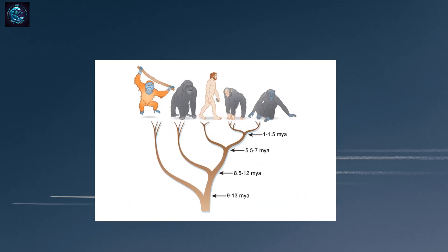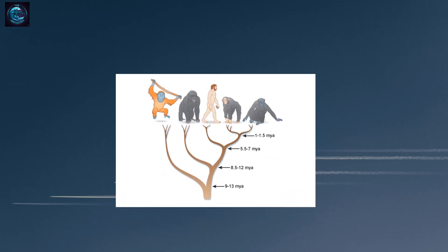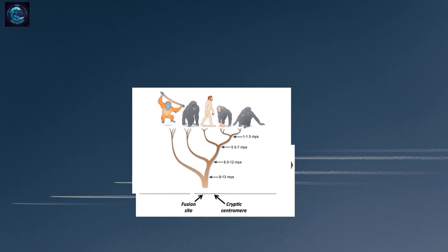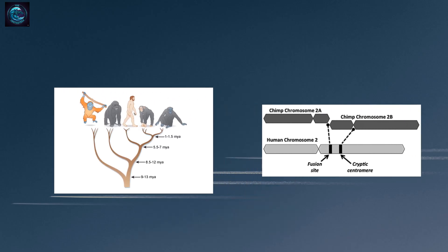So let's watch what happened. About six million years ago, in one of our ancient ancestors, something remarkable occurred. Two separate chromosomes, which we now call 2a and 2b in great apes, came together. Their ends fused, merging the telomeres at the fusion point and leaving one centromere to become vestigial.